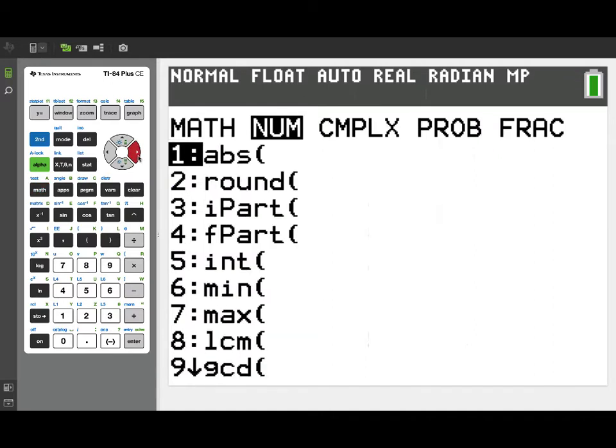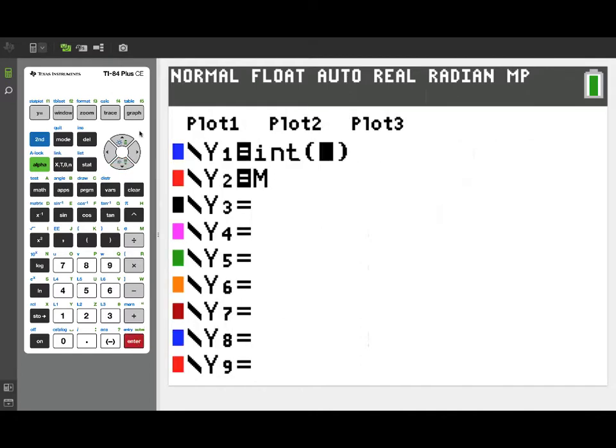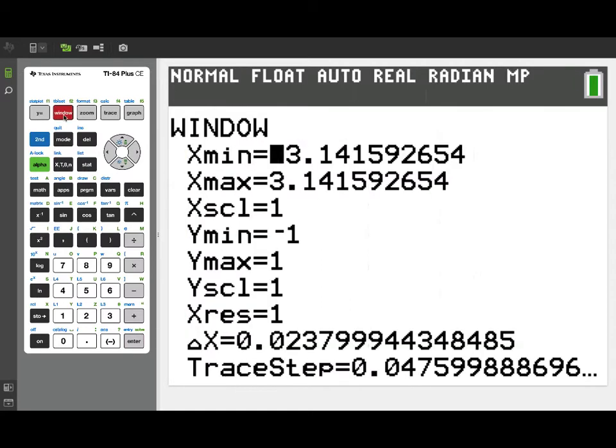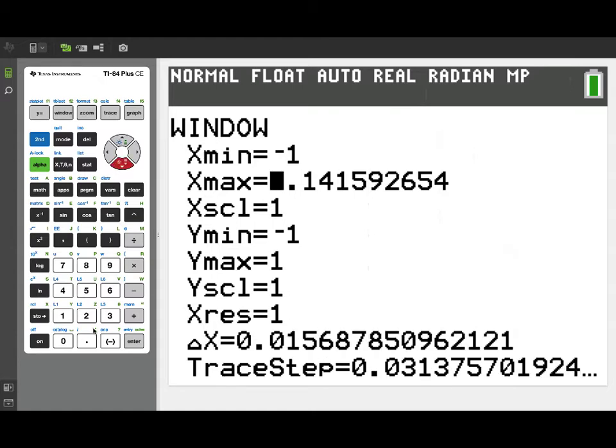Now, the next example we're going to look at is an important one. This is the greatest integer function, abbreviated int of x. As usual, I'm going to want to, let's do a window of xmin, negative one, and xmax of three.